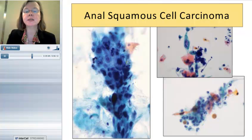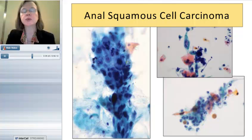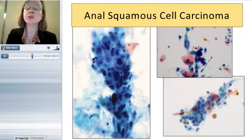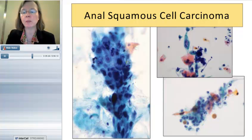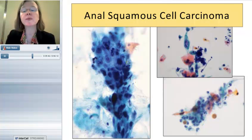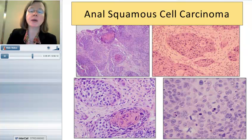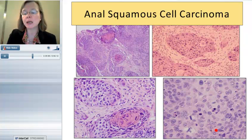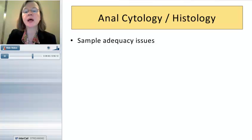Cancers are what we want to catch — the earlier we diagnose a cancer, the better prognosis our patients will have. On anal cytology, cancers can be more difficult to diagnose than on cervical cytology, in part because the tumor diathesis may not be as prominent. You can see clinging diathesis on liquid-based cytology, which can be harder to separate from normal fecal flora. But you can see pleomorphism in more keratinized lesions, tumor giant cells in non-keratinized cancers, and very prominent macronucleoli. On histopathology, many lesions are keratinized and often show atypical mitotic figures.